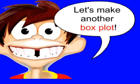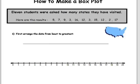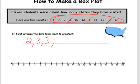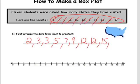Let's look at another example. 11 students were surveyed and asked how many states they've visited in their lifetime. Remember, the first thing we want to do is take our data and put it in order from least to greatest. So: one student visited two states, two students visited three states, one visited five, one visited seven, nine, two students visited 12, one visited 15, one visited 16, and I forgot 17. There were 11 students surveyed.